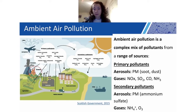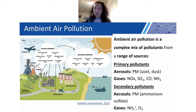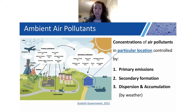Secondary pollutants can also be aerosols or gases. A good example of an aerosol secondary pollutant is particulate matter, where ammonia and sulfuric acid react to form ammonium sulfate. Or we can get secondary pollutants in gas form, such as ozone. The concentration of air pollutants in any particular location is controlled by: firstly, those primary pollutant emissions; secondly, the formation of secondary pollutants in the atmosphere; and finally, the dispersion and accumulation of these pollutants, which is largely controlled by the weather.